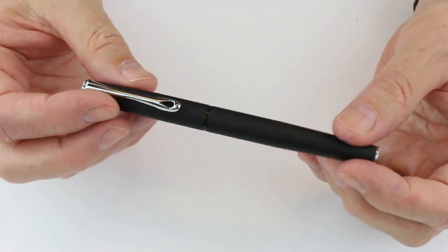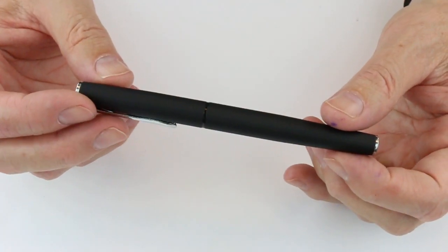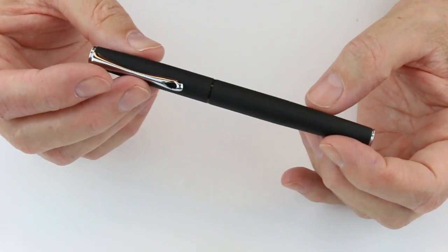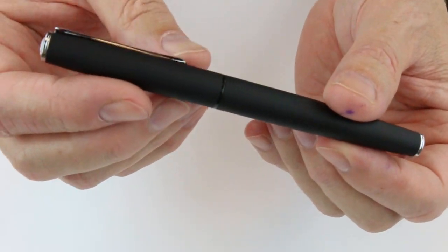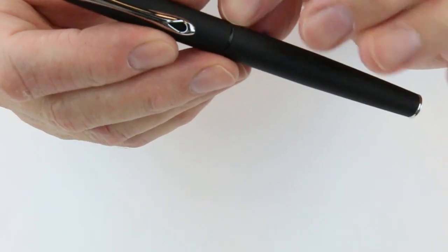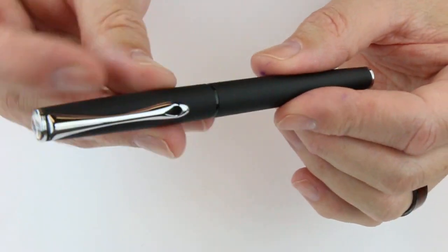And of course we have the Diplomat Esteem fountain pen. It has a matte finish on both the cap and barrel with silver chrome colored trim on both the clip and both ends of the pen.